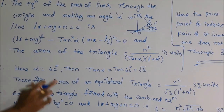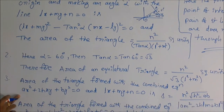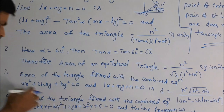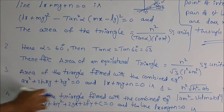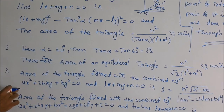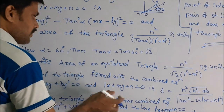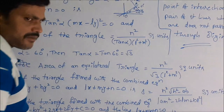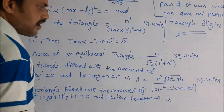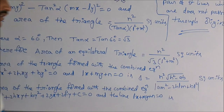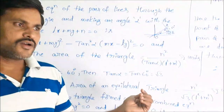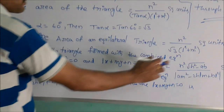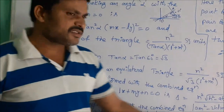Next, the area of the triangle formed with the combined equation ax² + 2hxy + by² = 0 passing through the origin, and the given line lx + my + n = 0. The area formula is: Δ = n² · √(h² − AB) / |AM² − 2HLM + BL²| square units. This is one of the important theorems in pair of straight lines, given in SA type questions in intermediate public examinations.